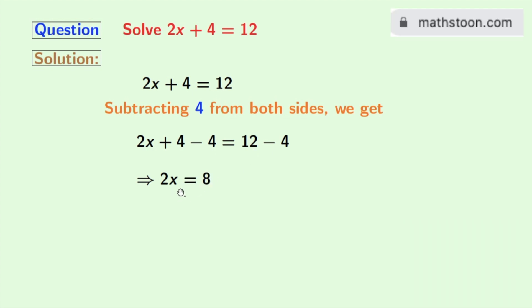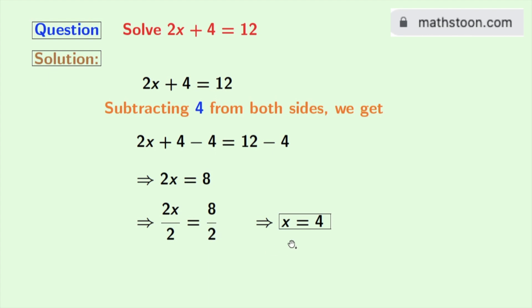Now as the coefficient of x is 2, we will divide both sides by 2. Doing so, we get 2x by 2 is equal to 8 by 2. Now look that in both the numerator and denominator we have 2, so this gets cancelled and we are left with x. And in the right hand side, 8 by 2 gives us 4. So finally, we get x is equal to 4 as our answer.